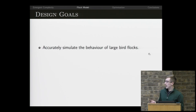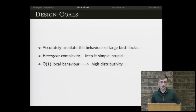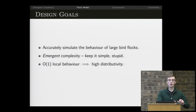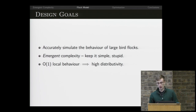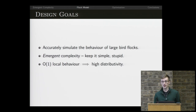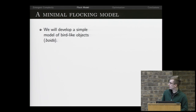We want to accurately simulate this behavior, and we want the complexity to be emergent — we don't want a really complicated system, because we're trying to show we can achieve this even if we were a stupid starling. We also want order-one local behavior, because that is the constraint that nature puts on us.